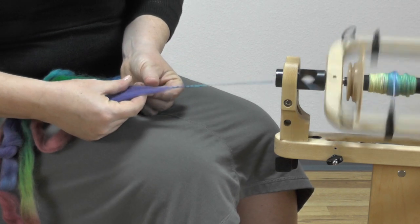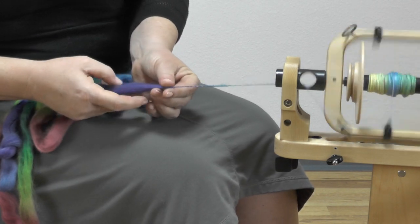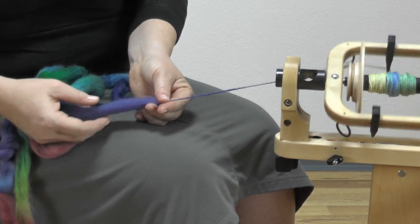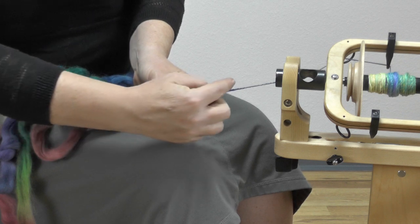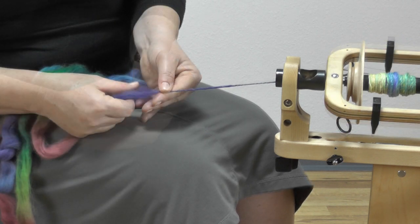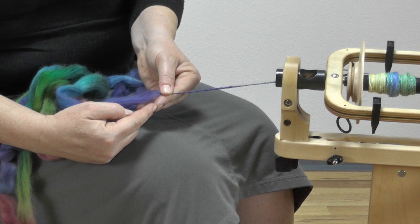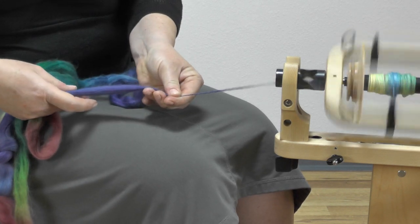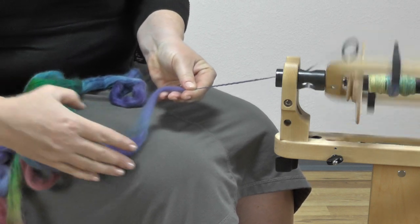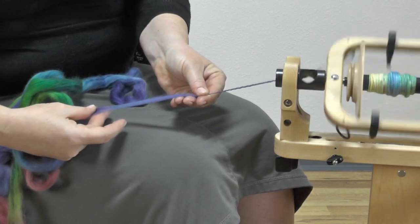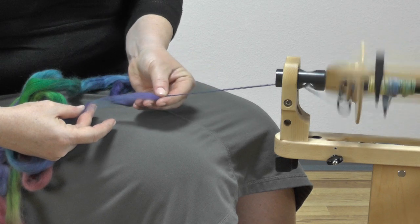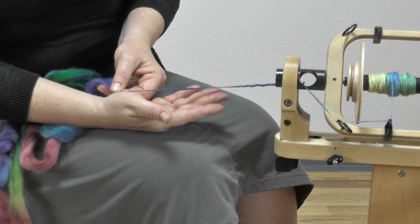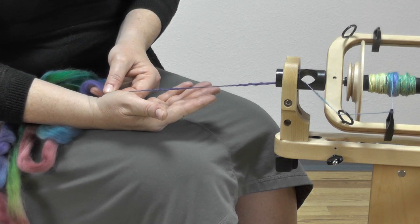Join the yarn and draft a backward draw almost to the end of the staple length. You are going to notice that now you have a thick bump and a very thin section. Pinch the fiber at the top of the drafting triangle. I'm going to hold the thin section and draft back again until it looks like the fiber is going to break apart. Slide your forward hand over the fragile looking section and you will see that you have created another thick and thin section.